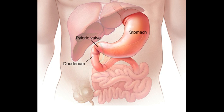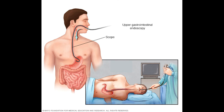Adenocarcinoma is the most common type of stomach cancer. Stomach cancer is common in the United States, and the number of people diagnosed with the disease has been declining. Stomach cancer is much more common in other areas of the world.